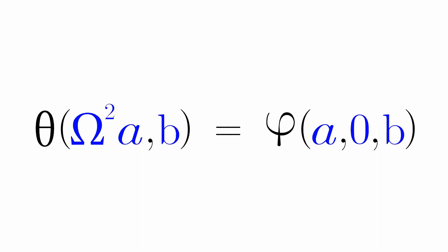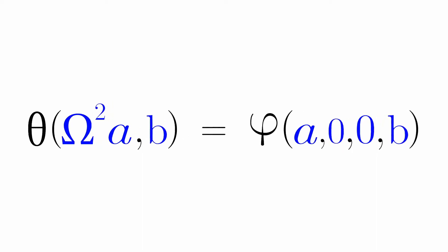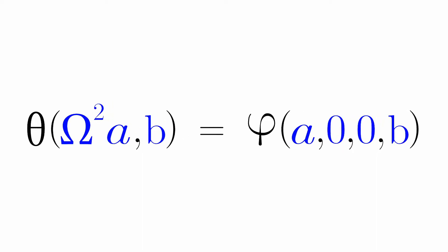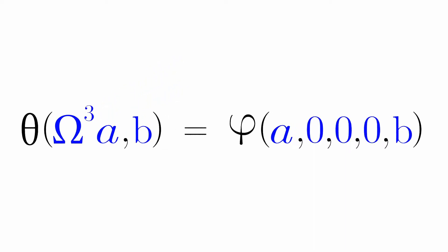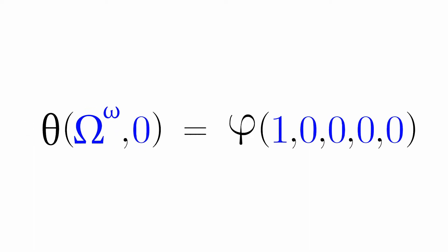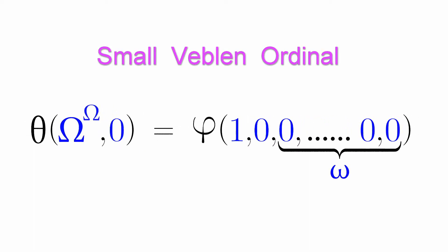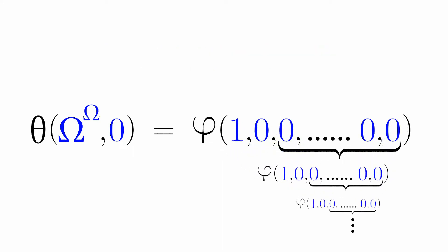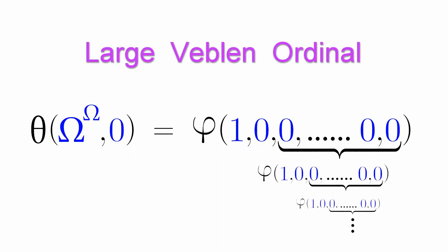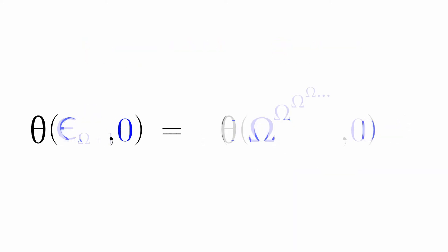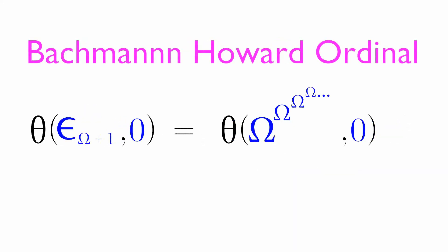If we do omega squared times a, we add another argument. If we do omega cubed, we add another argument. Now this is the small Veblen ordinal. And then this is the large Veblen ordinal. And then this one is the Bachmann-Howard ordinal.